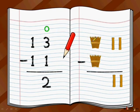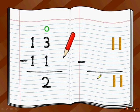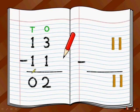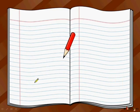Now start with the 10s place: 1 bundle of 10 sticks minus 1 bundle of 10 sticks, so it is 0. Same way in the numbers, in the 10s place you have 1 minus 1 which is equal to 0. So 13 minus 11 — we have got the answer, which is 2.